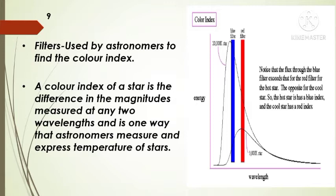The brightness measured through each filter is usually expressed in magnitudes. The difference between any two of these magnitudes, say between blue and the visual magnitude, that is B minus V, is called a color index. A color index of a star is actually the difference in magnitude measured at any two wavelengths and is one way that astronomers measure and express temperature of stars. By agreement among astronomers, the ultraviolet, blue, and visual magnitudes of the UBV system are adjusted to give a color index of zero to a star with a surface temperature of about 10,000 Kelvin, such as Vega.